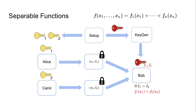In this talk, we mainly focus on the specific function class of separable functions. Separable functions are functions that can be written as the sum of individual single-input functions applied on all the different inputs. Bob receives a functional key corresponding to the separable function such that he can learn f1(x1) + f2(x2). This function class is a good match for our word count example and allows the function evaluator to learn the desired information.